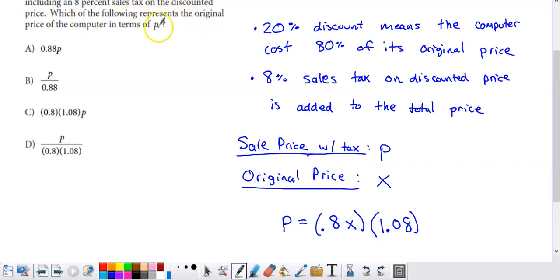Which of the following represents the original price of the computer in terms of P? Well, I grouped these to kind of show, you know, this is the sale price without tax. And then this times 1.08 is going to be what lumps the tax onto that bill.